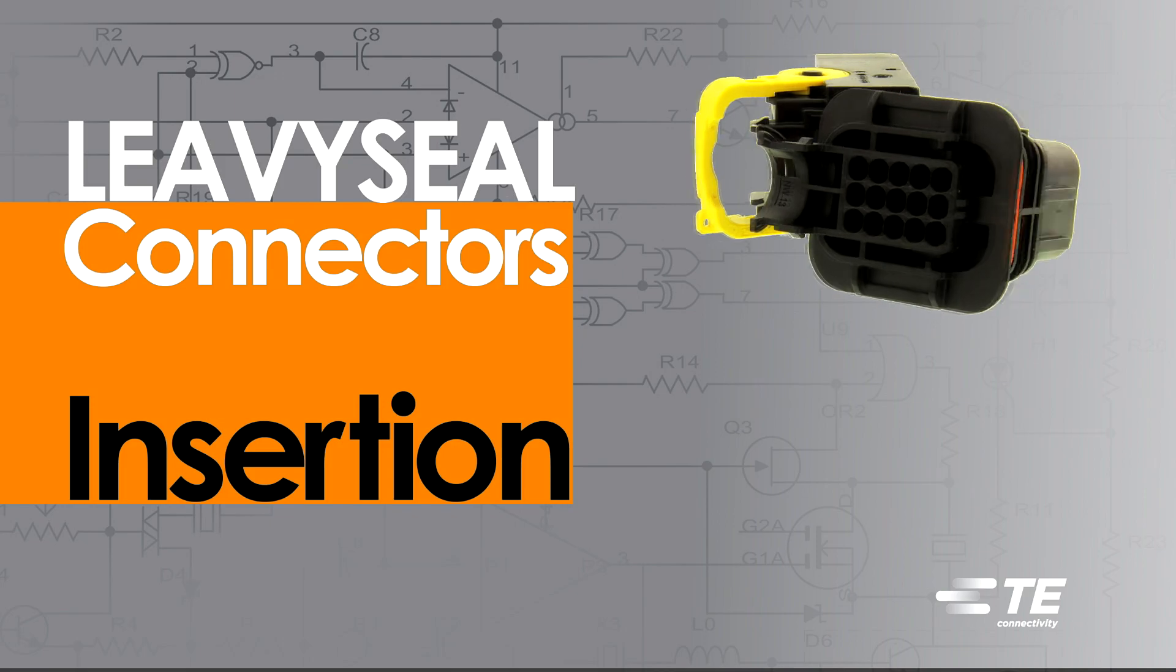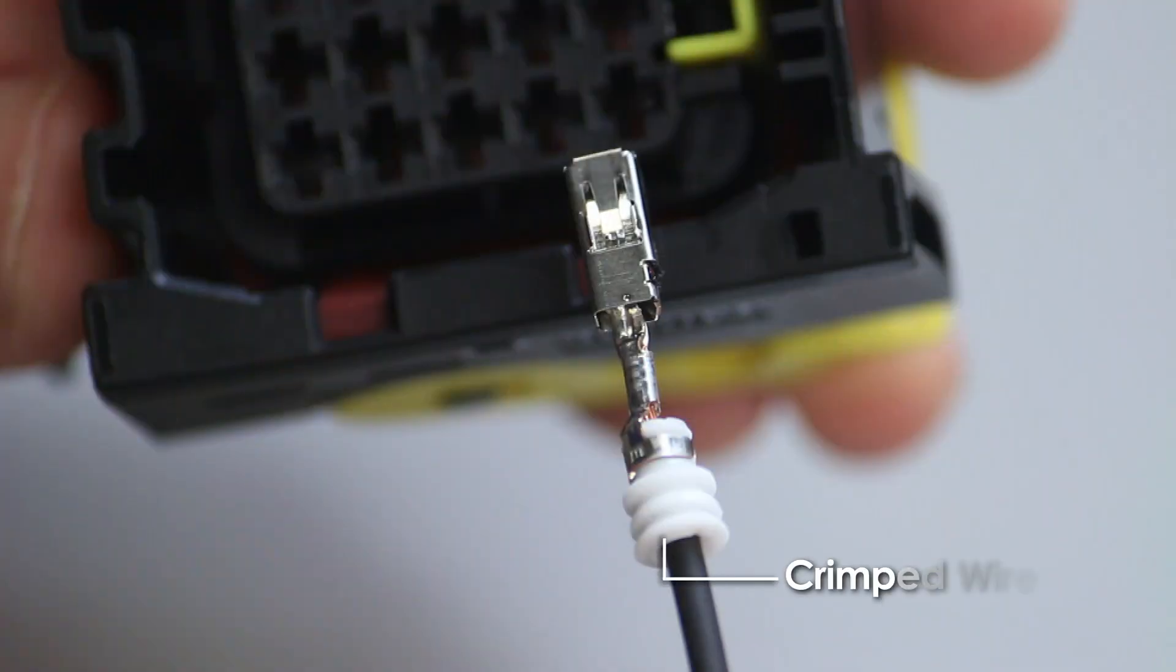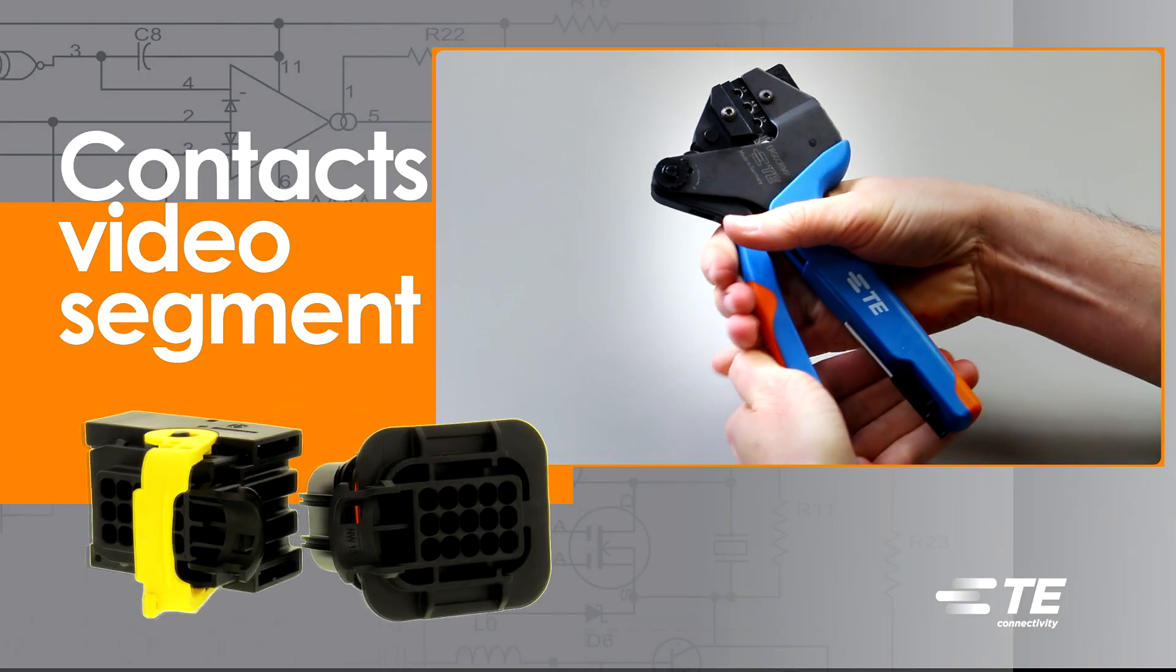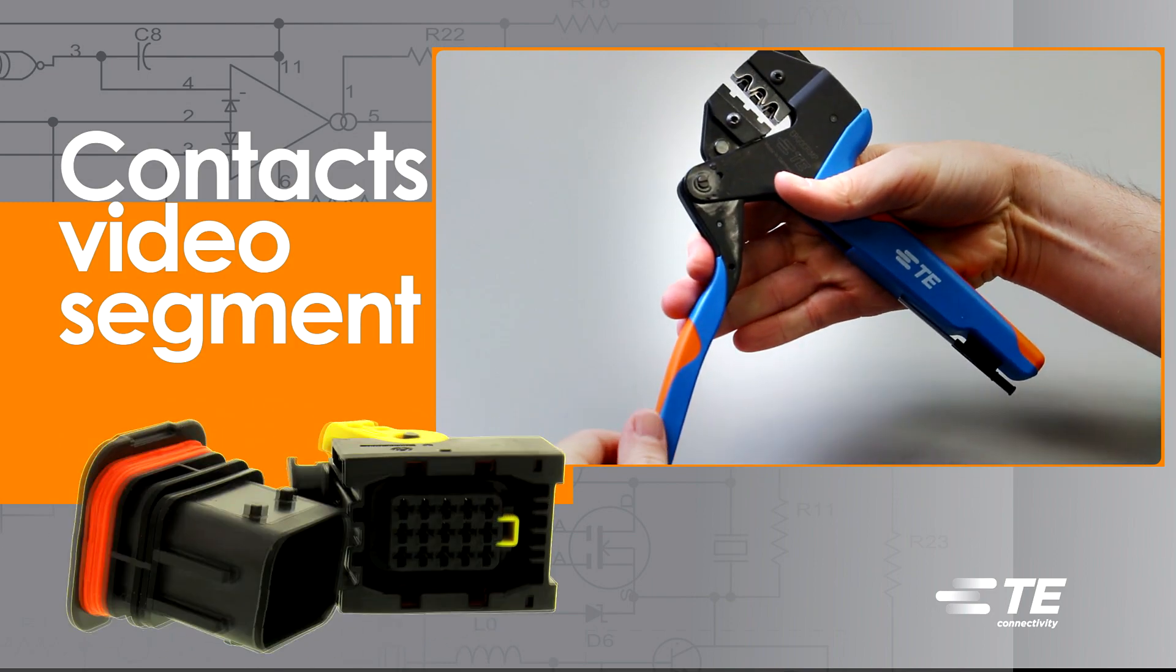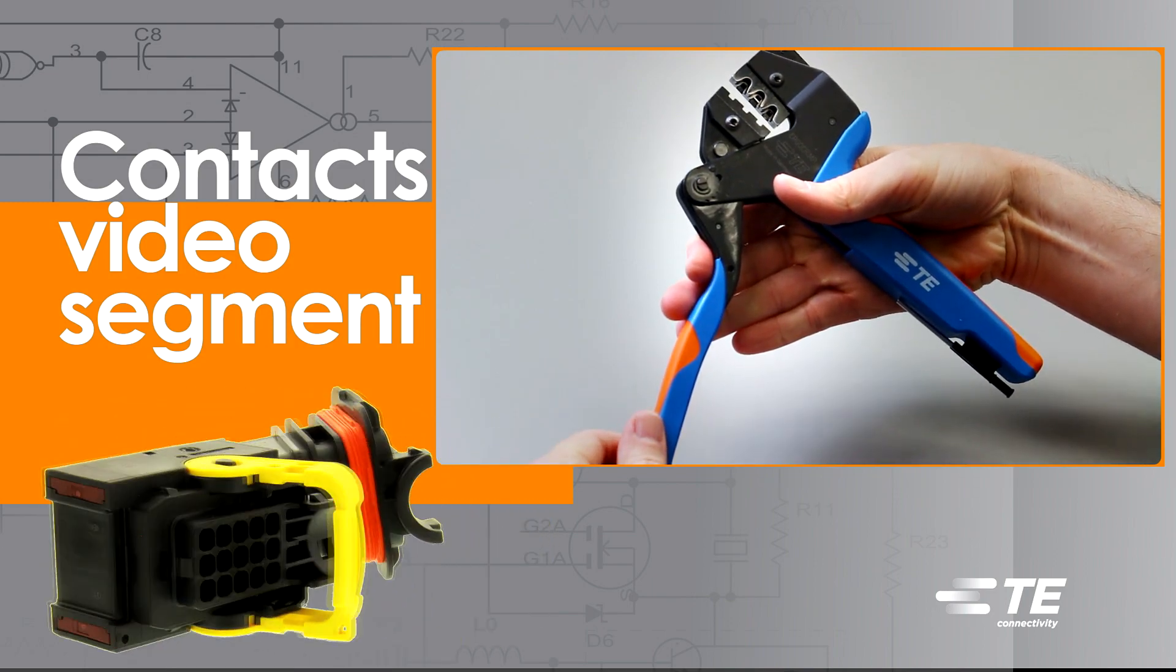Levee Seal Contact Insertion. Begin with a crimped wire. For assistance, refer to the AMP MCP Contacts video segment for detailed instructions.